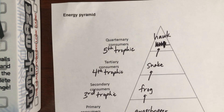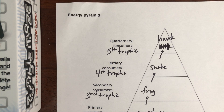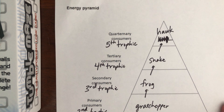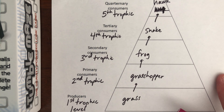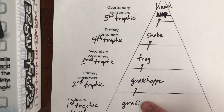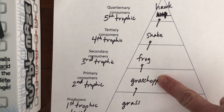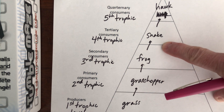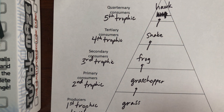This is what we call an energy pyramid. I think this works best if I pause and pick up in a minute. What I want you to see here is that the energy pyramid is really based off a food chain: we have the grass, which is eaten by the grasshopper; the grasshopper is eaten by the frog; the frog is eaten by the snake; the snake is eaten by the hawk. So it's based on a single food chain.